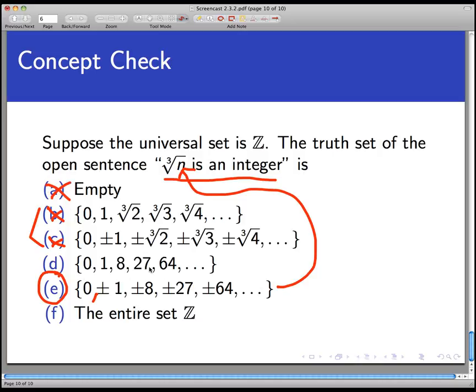But also, if you remember your basic math here, the cube root of a negative number is okay to compute. So I also want to include negative 8, for example. The cube root of negative 8 is negative 2. And that's an integer. So all of these guys work.